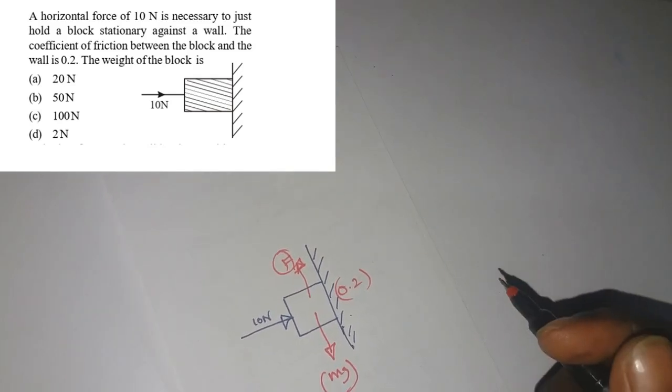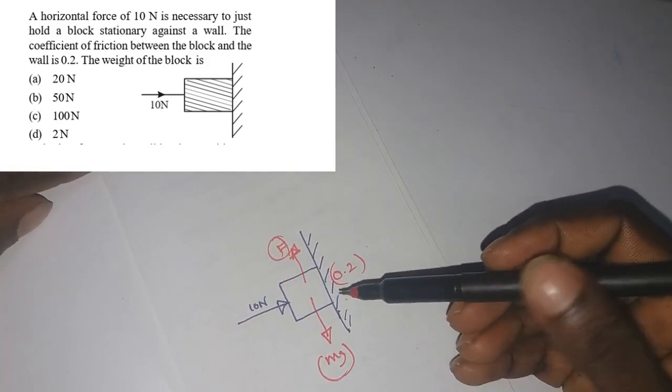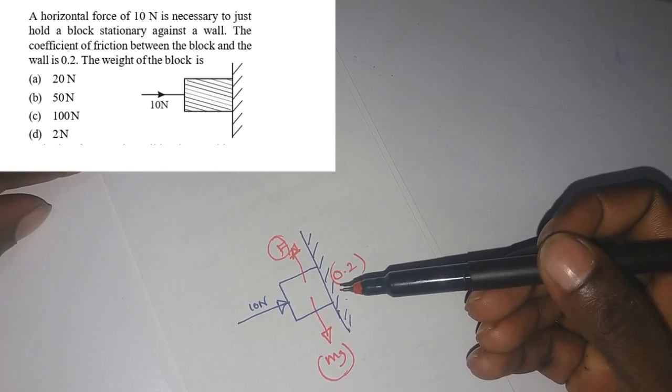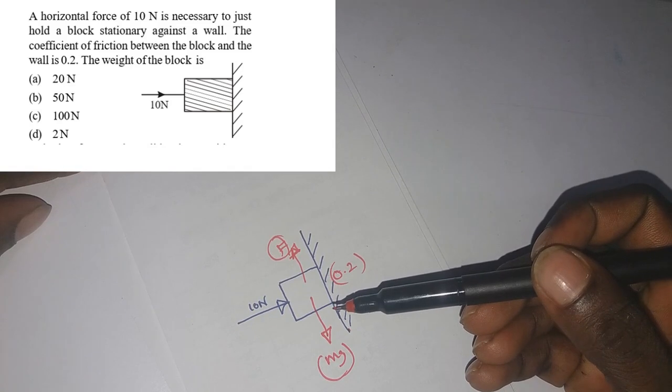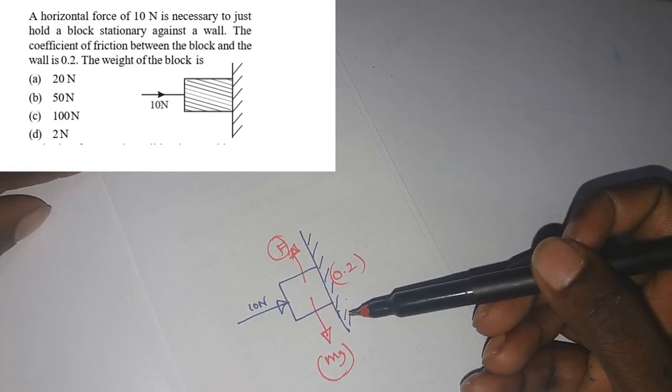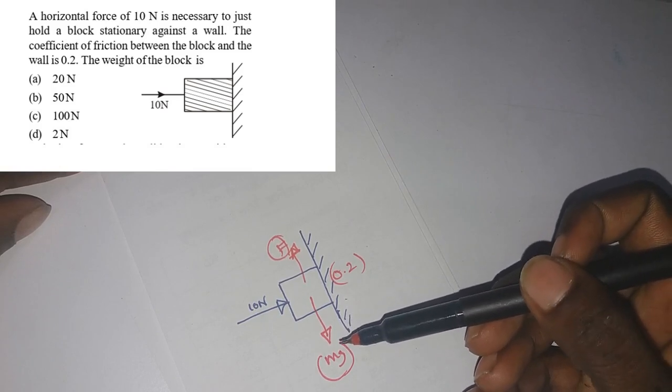Right now in this question they're asking: a horizontal force of 10 newton is necessary to just hold a block stationary against a wall. The coefficient of friction between the block and the wall is 0.2. The weight of the block is - that's the question.